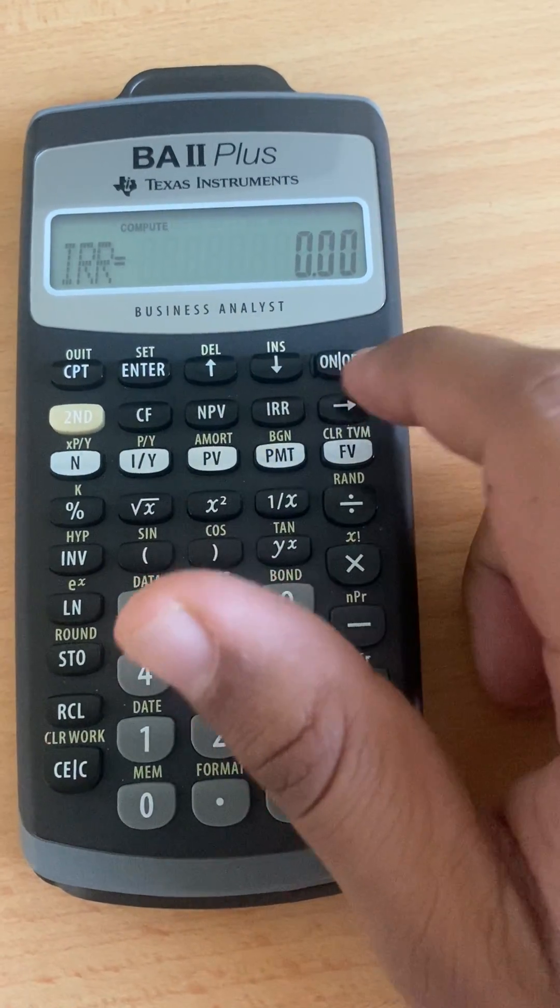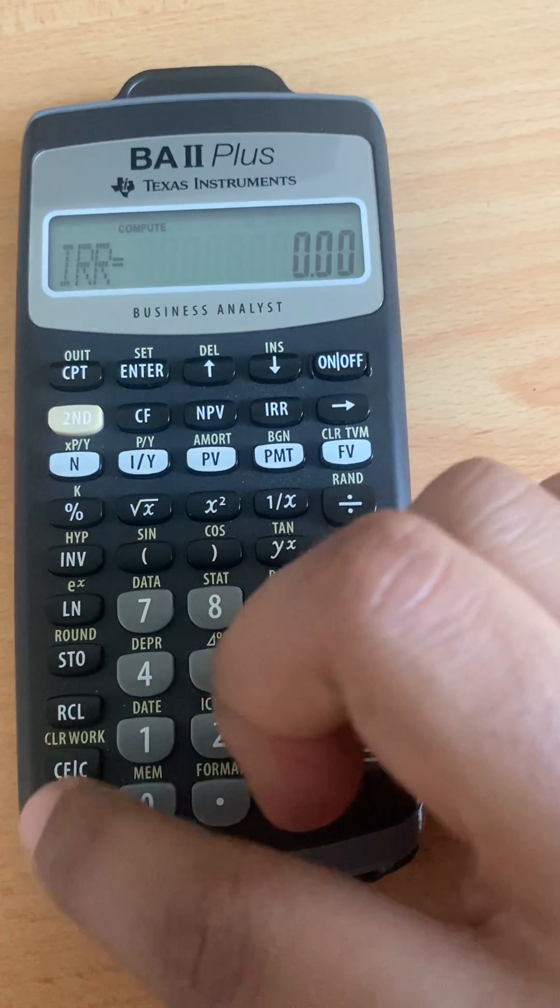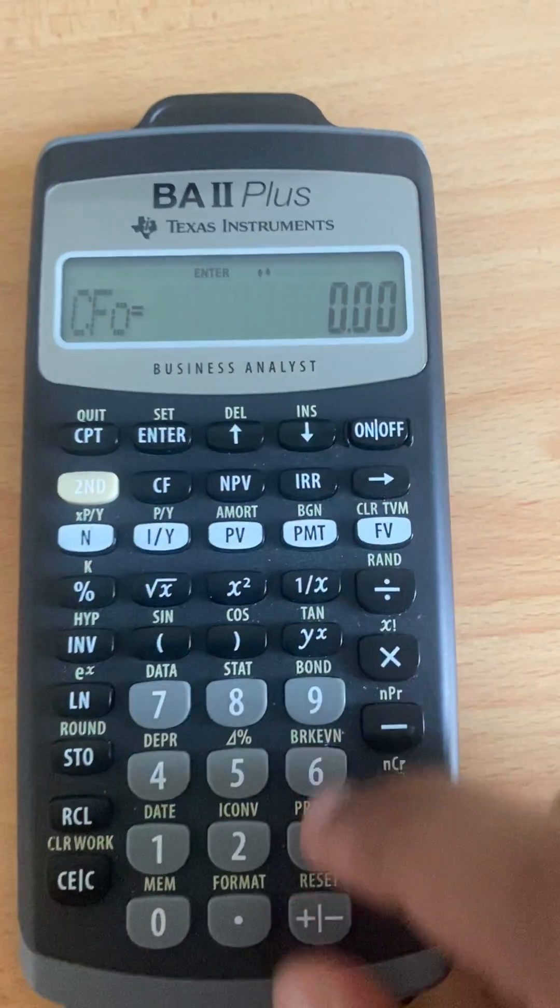So this is very important, alright? This second and clear time value of money is different. Second and clear work resets the calculator function, alright?